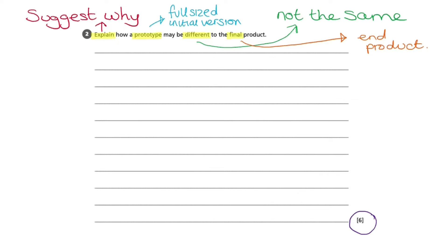This question is worth six marks. Therefore, we must make at least six points within our explanation. I want to start by letting the examiner know that I know what a prototype is.